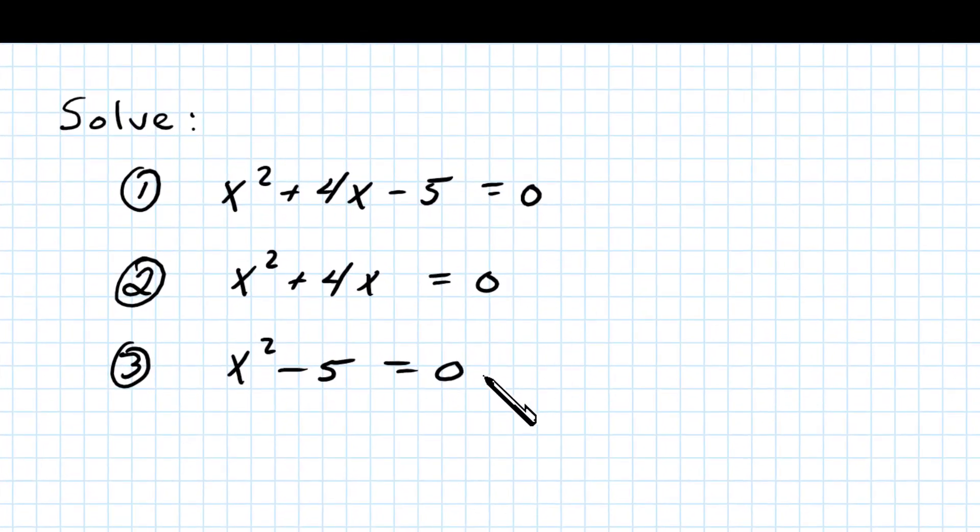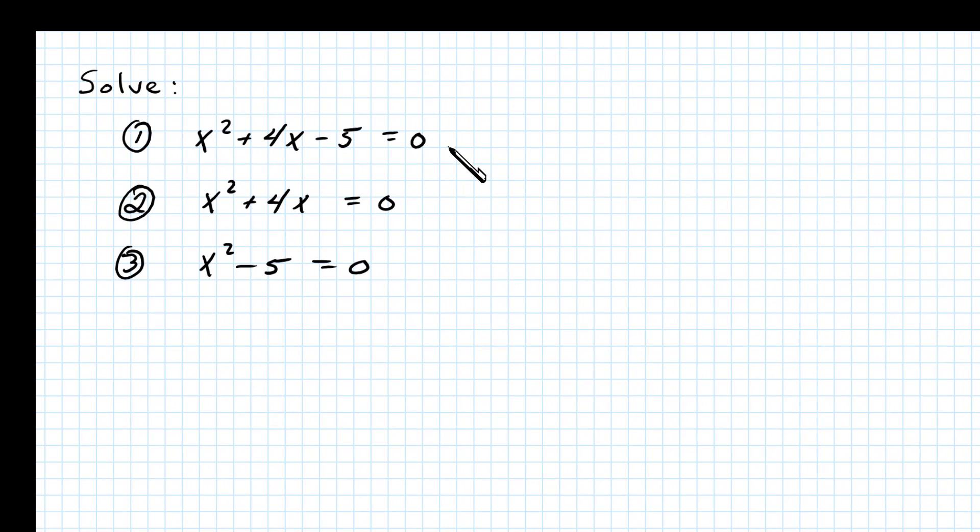Here we have three quadratic equations. The first one is a quadratic trinomial. Notice we have each term: an x squared, a linear term, and a constant term. The next two are quadratic binomials. This first one has a linear term but no constant term. The third one has no linear term. These are the three different types of quadratic equations that you're going to run into. Let's solve them.